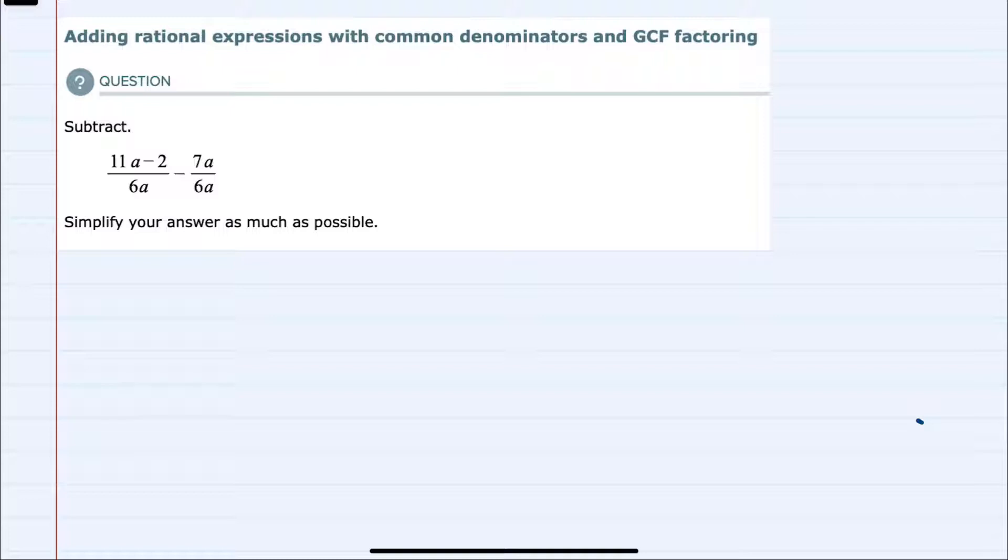We're asked to subtract these two fractions and as you can tell we already have a common denominator. They're both written over 6a, so when we do this subtraction we would always keep that denominator 6a here.